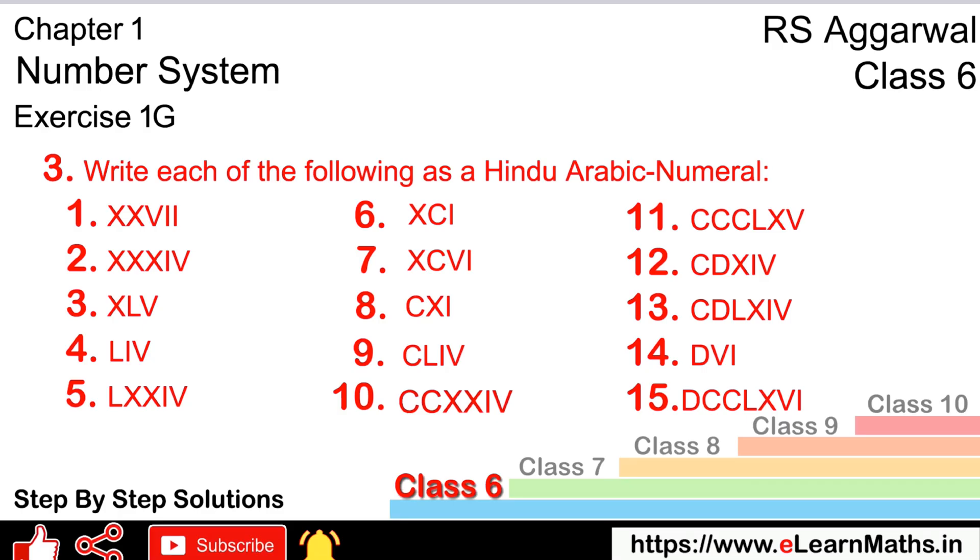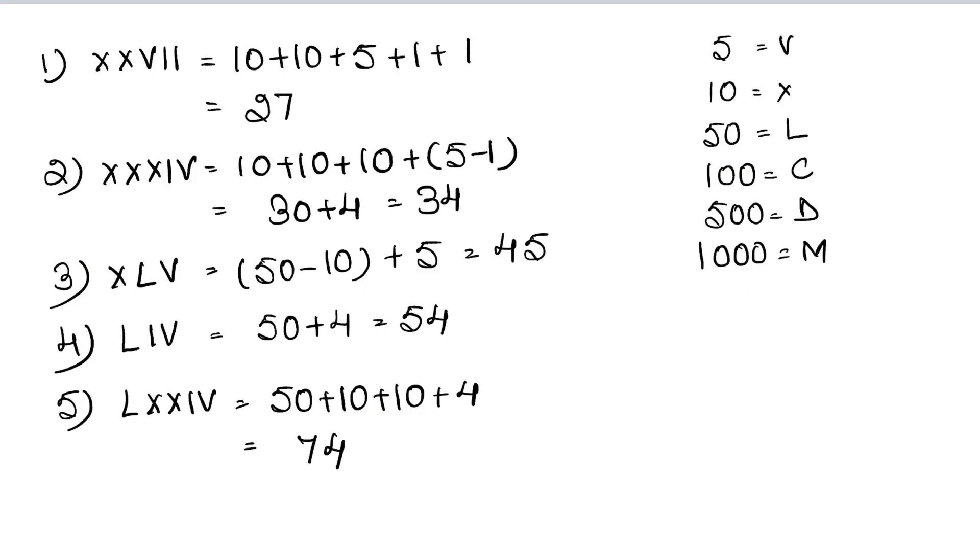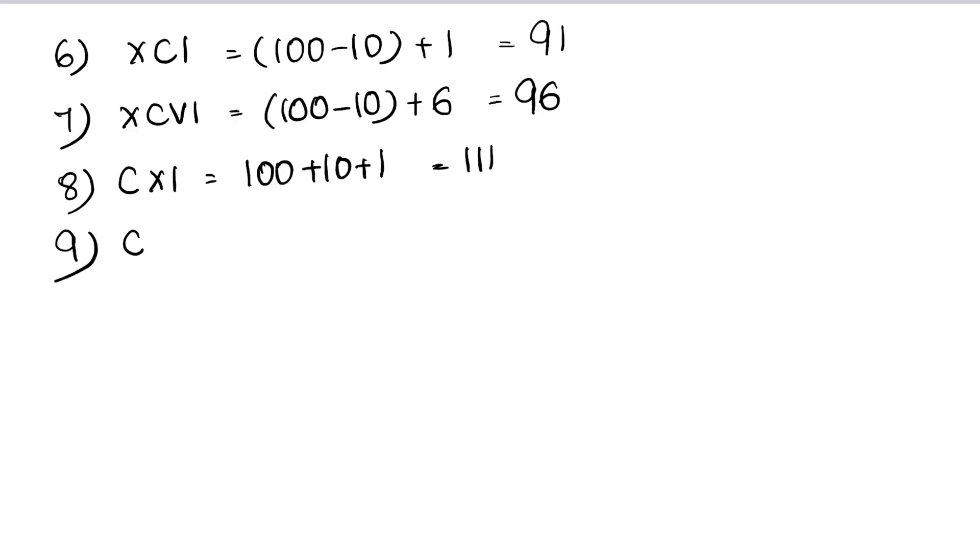Ninth is CLIV. C is 100, L comes after so add 50, and IV is 4, so that is 154.